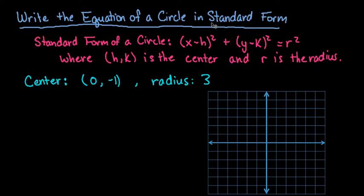The standard form of a circle is x minus h squared plus y minus k squared equals r squared, and basically what this is, is the distance formula.